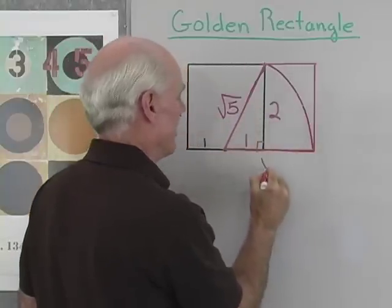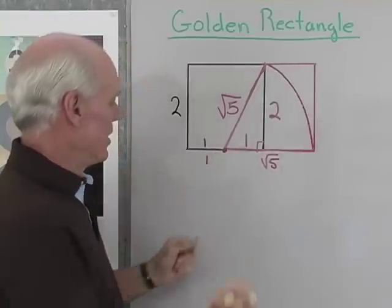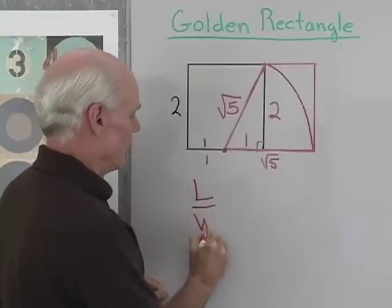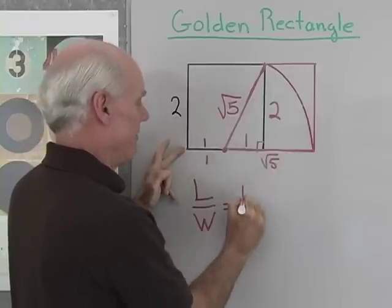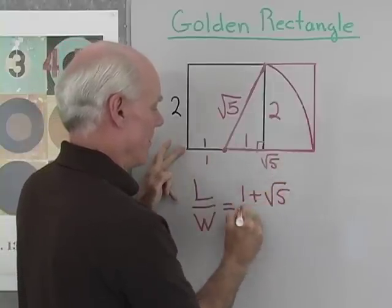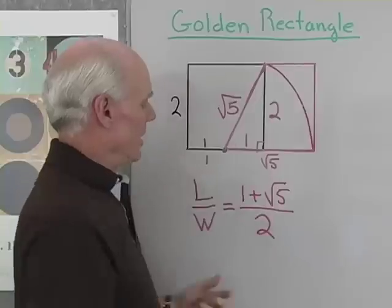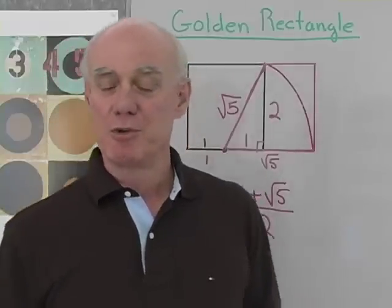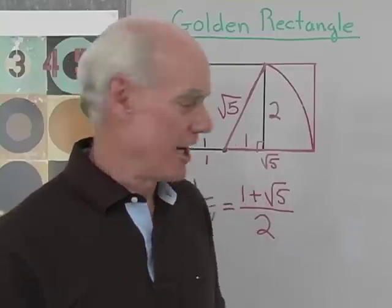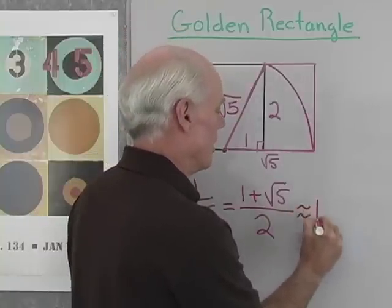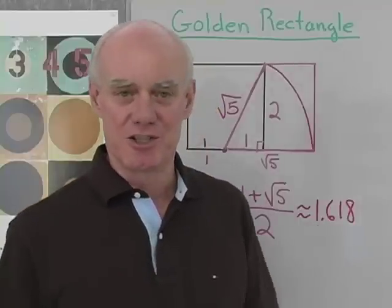So this length is square root of 5, and that means this length right here is also square root of 5. This little length is 1. So the ratio of length to width in the golden rectangle: the length is 1 plus square root of 5, and the width is 2. So this number, (1 + √5) / 2, is an irrational number, but it's also called the golden ratio — a very special number in mathematics. If you work this out on a calculator, it's approximately equal to 1.618.